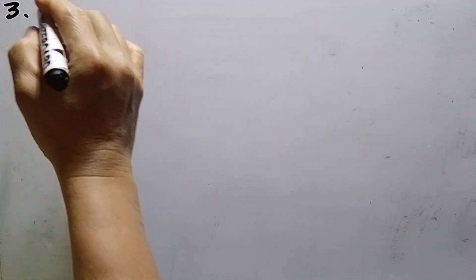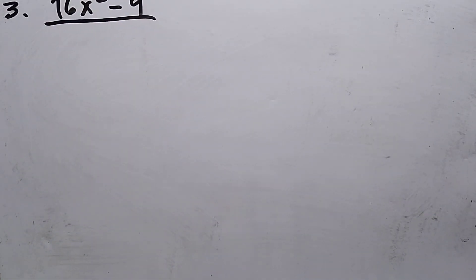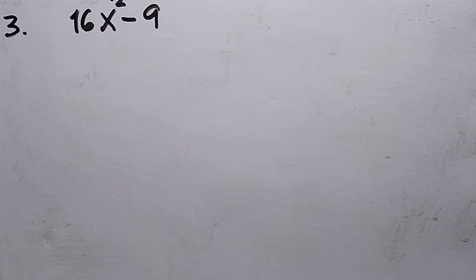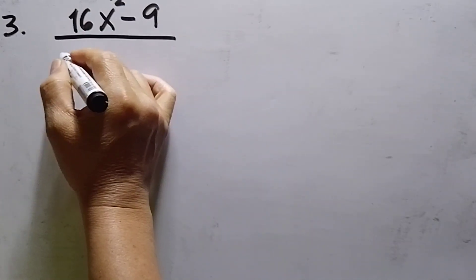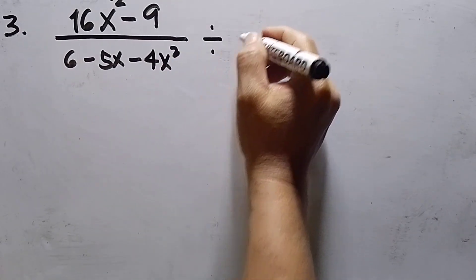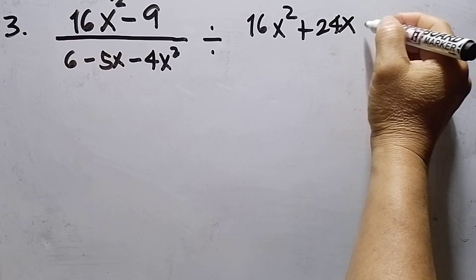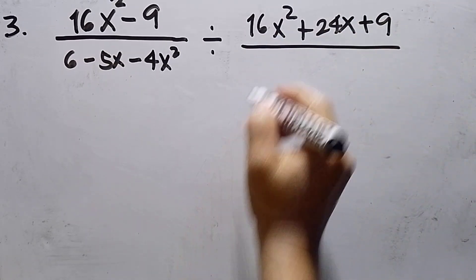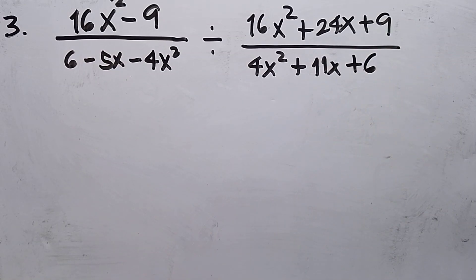Let's proceed to number 3. Number 3 is: (16x² - 9) over (6 - 5x - 4x²) divided by (16x² + 24x + 9) over (4x² + 11x + 6).